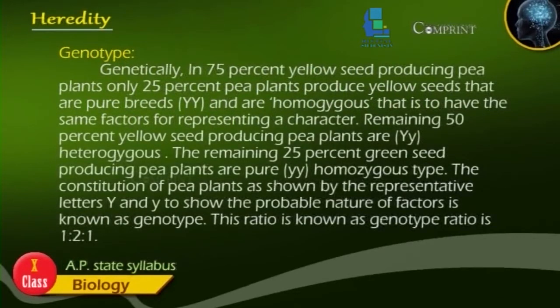Genotype. Genetically, in the 75% yellow seed-producing pea plants, only 25% produce yellow seeds that are pure breeds — capital Y capital Y — and are all homozygous, meaning they have the same factors for representing a character. The remaining 50% yellow seed-producing pea plants are capital Y small y heterozygous. The remaining 25% green seed-producing pea plants are pure small y small y homozygous type. The constitution of pea plants as shown by the representative letters is known as genotype, and this ratio is 1:2:1.